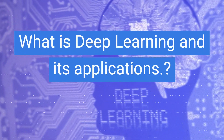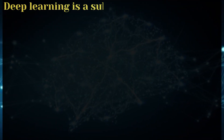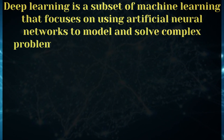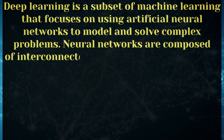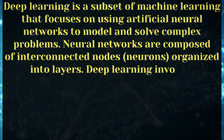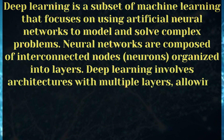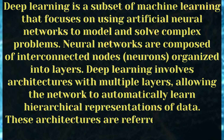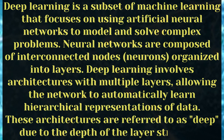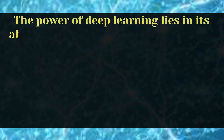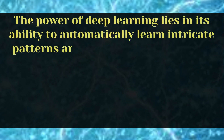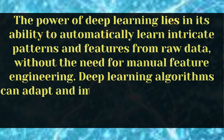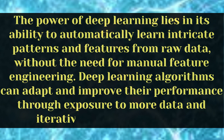What is deep learning and its applications? Deep learning is a subset of machine learning that focuses on using artificial neural networks to model and solve complex problems. Neural networks are composed of interconnected nodes, or neurons, organized into layers. Deep learning involves architectures with multiple layers, allowing the network to automatically learn hierarchical representations of data. These architectures are referred to as deep due to the depth of the layer structure. Deep learning can automatically learn intricate patterns and features from raw data without the need for manual feature engineering, and can improve through exposure to more data and iterative training.